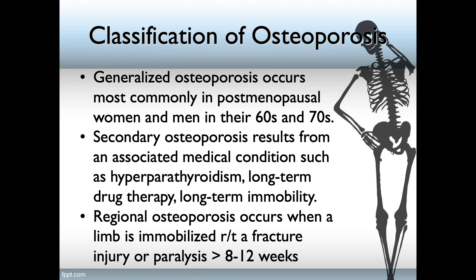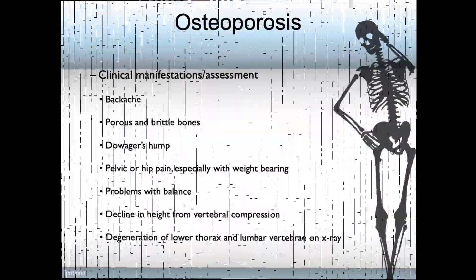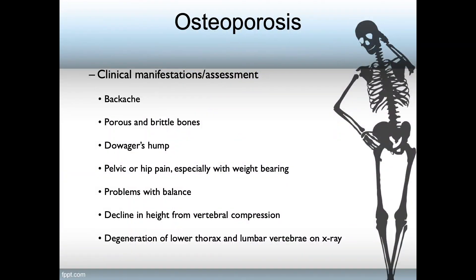Secondary osteoporosis results from an associated medical condition, such as hyperthyroidism, long-term drug therapy, or long-term immobility. Regional osteoporosis occurs when a limb is immobilized — for instance, as if it is fractured — and the immobilization lasts for longer than eight weeks.